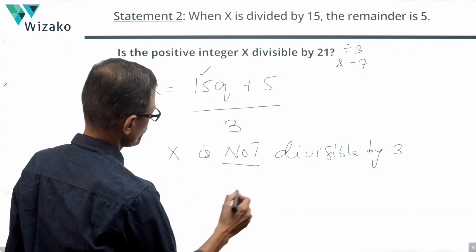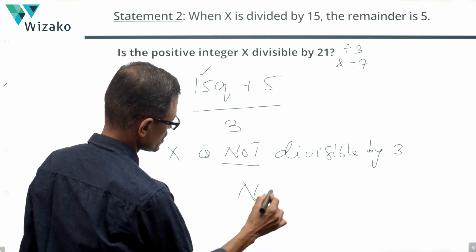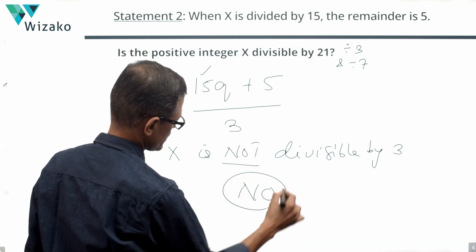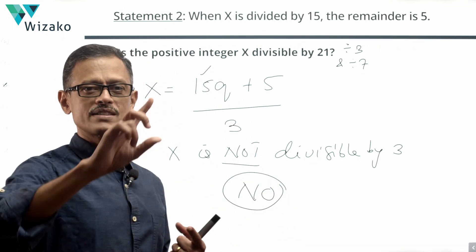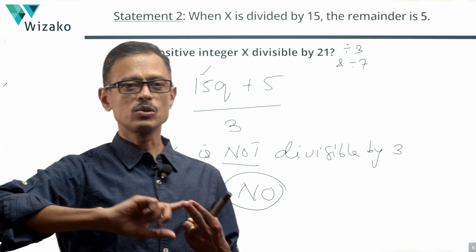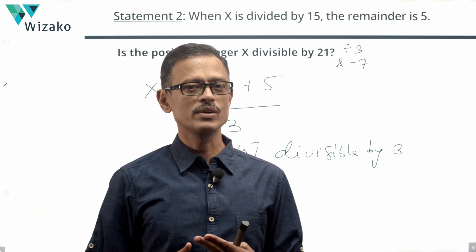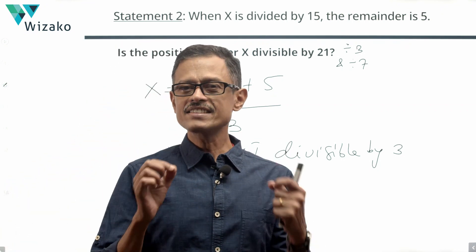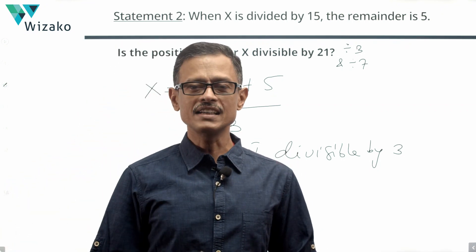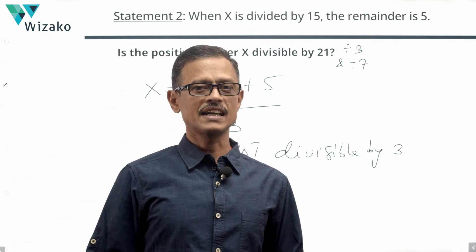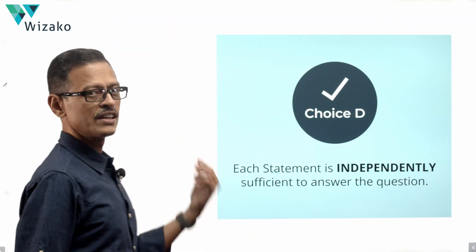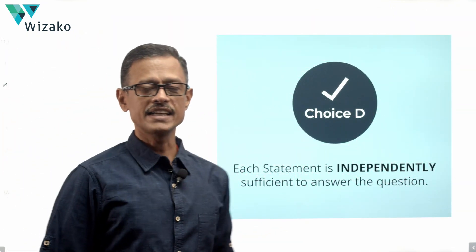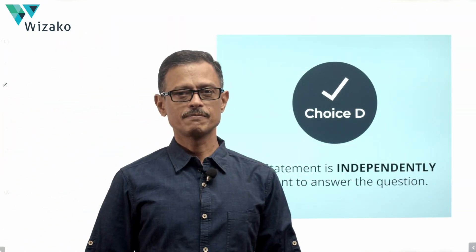If x is not divisible by 3, it cannot be divisible by 21. So Statement 2 also gives us a conclusive no. Statement 1 gave a no, and Statement 2 also gives a no — each statement has independently and conclusively answered the question. Therefore, each statement is independently sufficient, and Choice D is the answer.